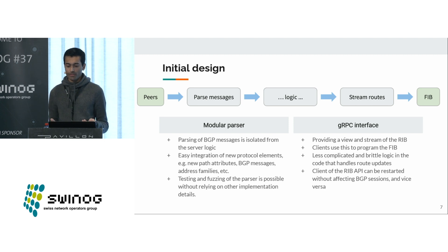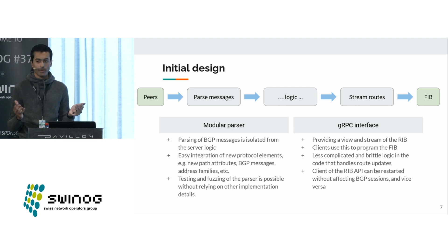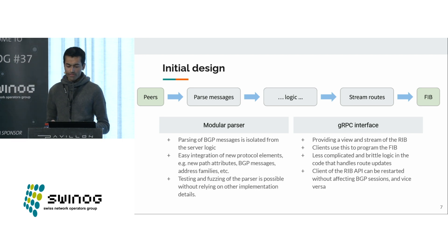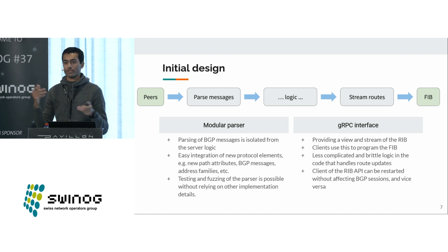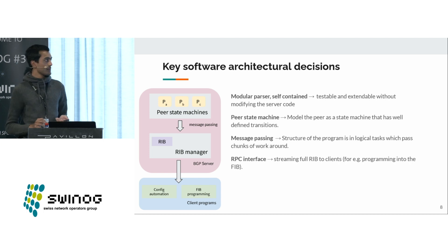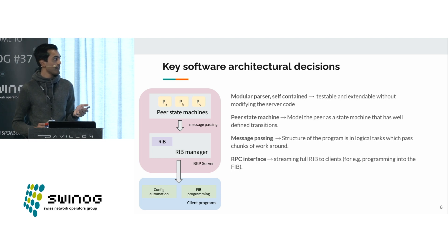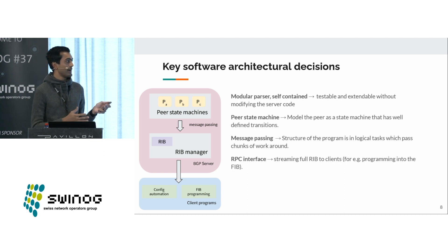The RPC interface I chose was gRPC, because I found a nice library implementing that in Rust. This provides both a view and a stream of the routing information base — you can do a dump of all routes currently there, or you can stream out all routes live, opening the connection and getting routes as they're coming in. The BGP server itself just connects to the peers, parses the messages, and then puts them in the routing information base, which is self-contained and isn't concerned with automation, config files, or programming the FIB — all of that is left up to clients.